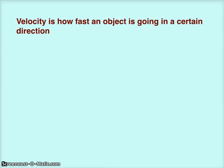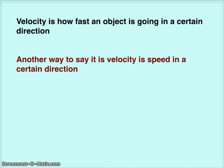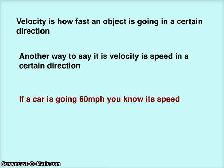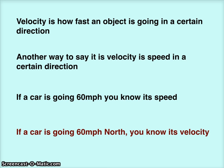Let's start with velocity. Velocity is how fast an object is going in a certain direction. Another way to say it is velocity is speed in a certain direction. If a car is going 60 miles per hour, you know its speed. If a car is going 60 miles per hour north, you know its velocity.